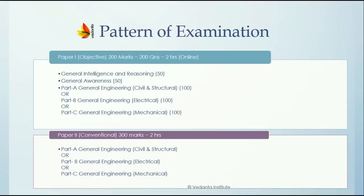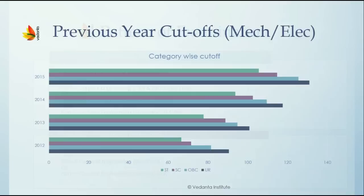Now let's take a look at the previous year cutoffs. If you closely observe this bar graph, you can see that the OBC cutoff is nearly 10 marks lesser than the open category cutoff, and the SC/ST cutoff is nearly 20 marks lesser than the open category cutoff in all the years. Also, the cutoffs are gradually increasing year by year.